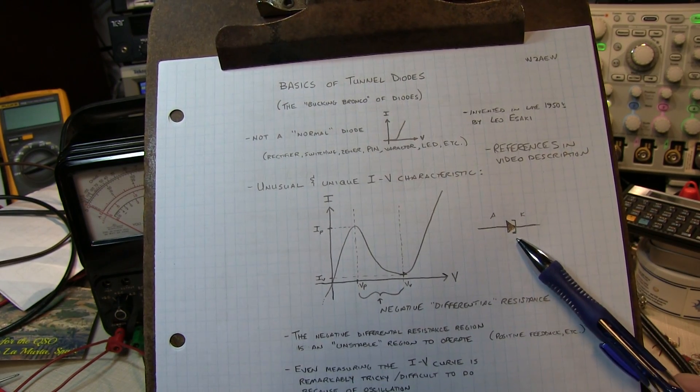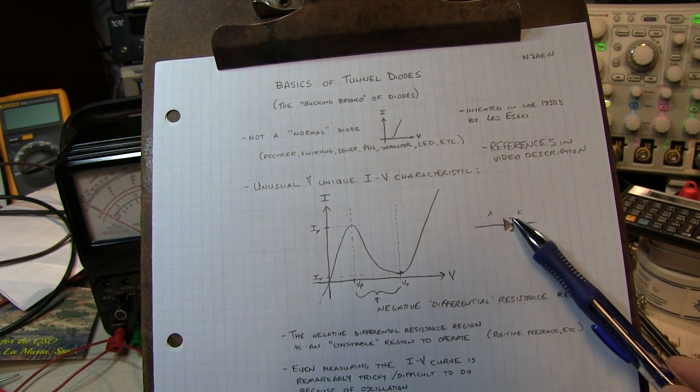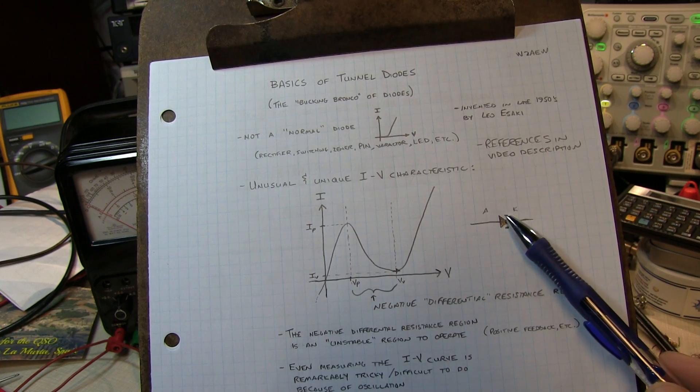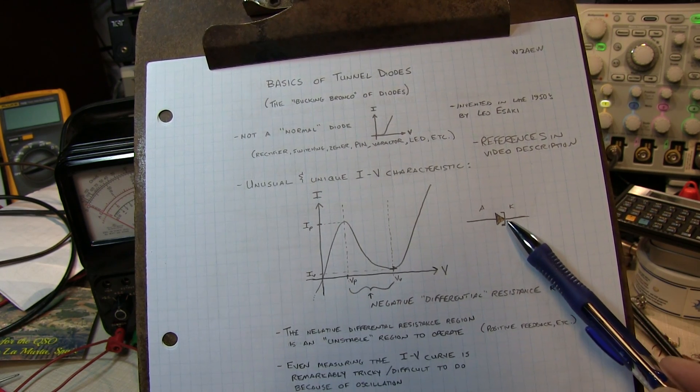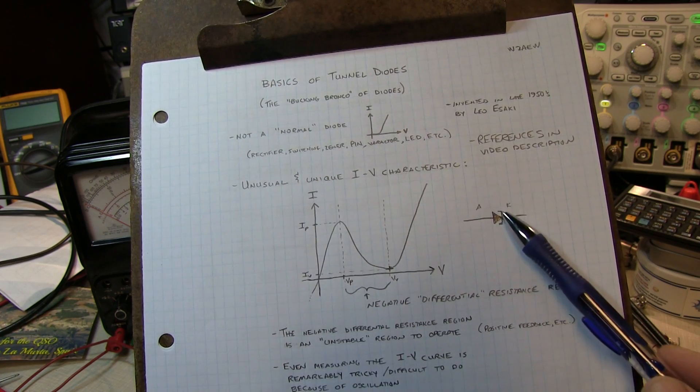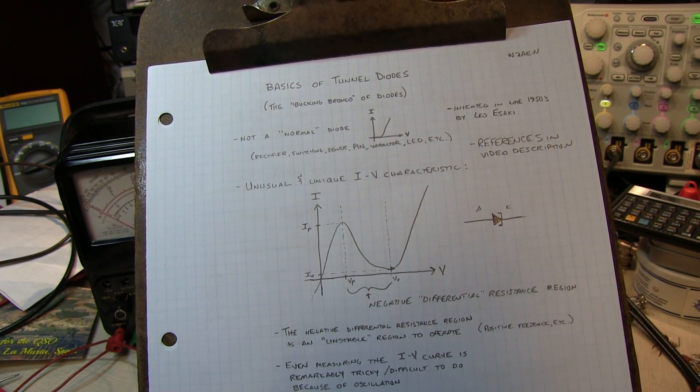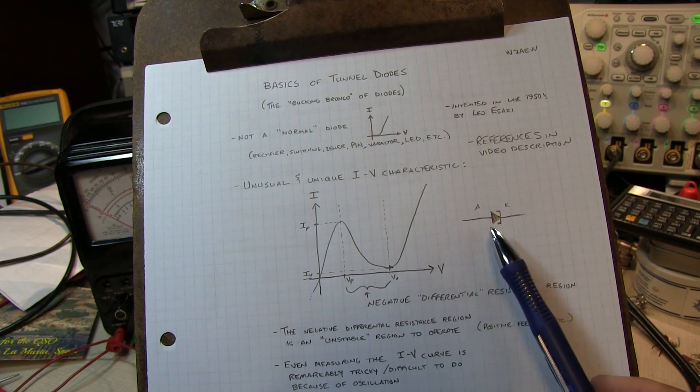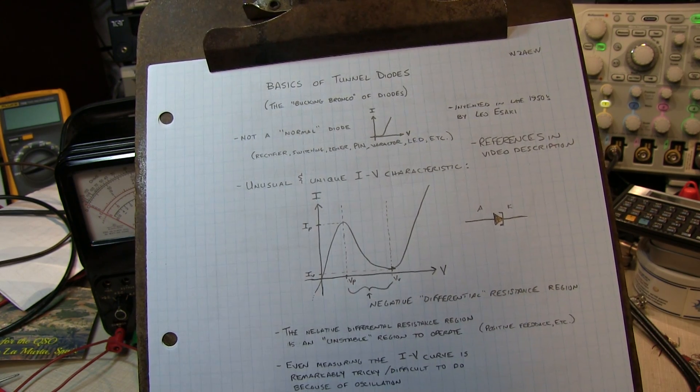The symbol for the tunnel diode is shown here. It looks a bit like almost like a Zener diode characteristic or even a Schottky, but both of these little legs are turned back towards the diode itself, so that's what the symbol, or one of the symbols for a tunnel diode is. There's a couple that have been used in the past, but that's the most common one that you'd run across.